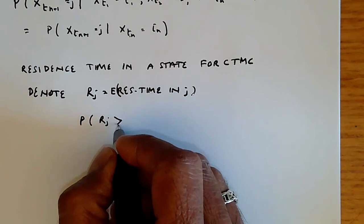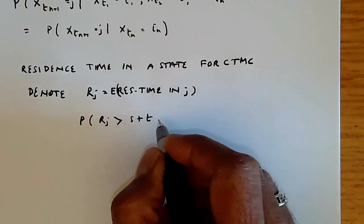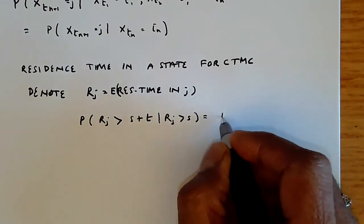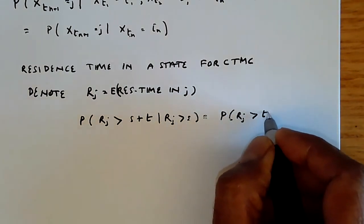then the probability that R_j exceeds some value s+t, given R_j is greater than s, is nothing more than probability R_j greater than t.